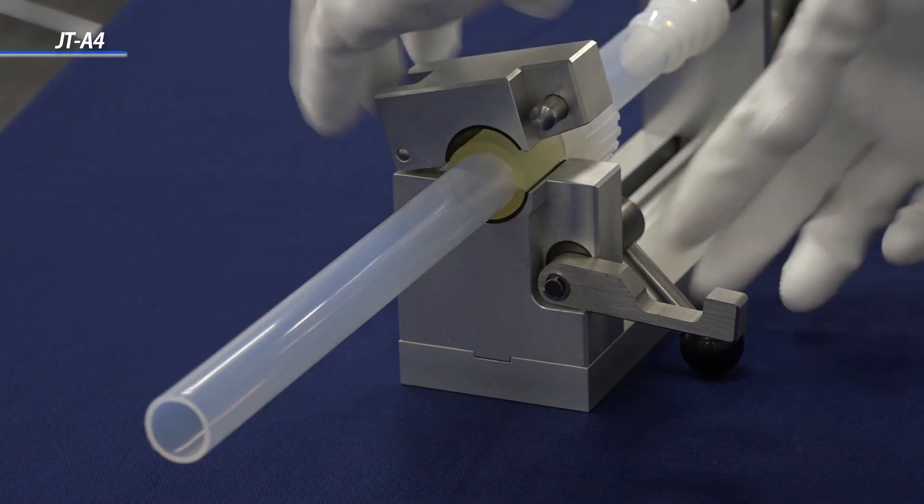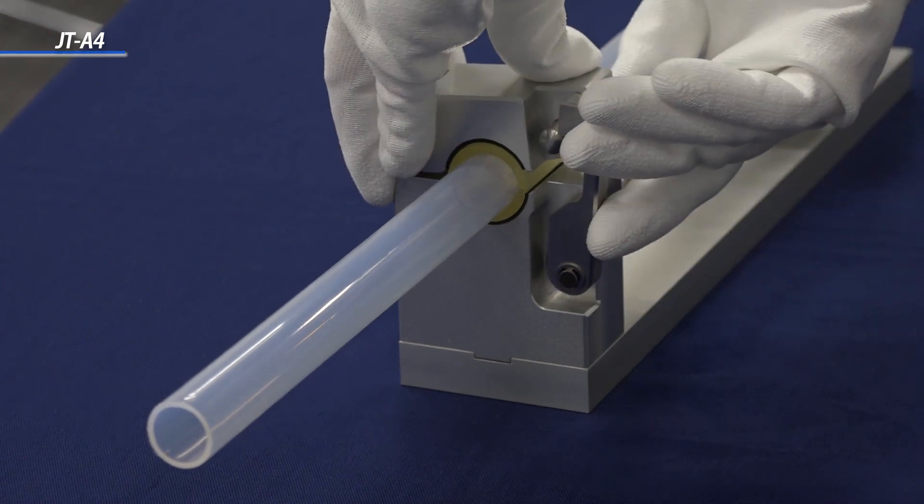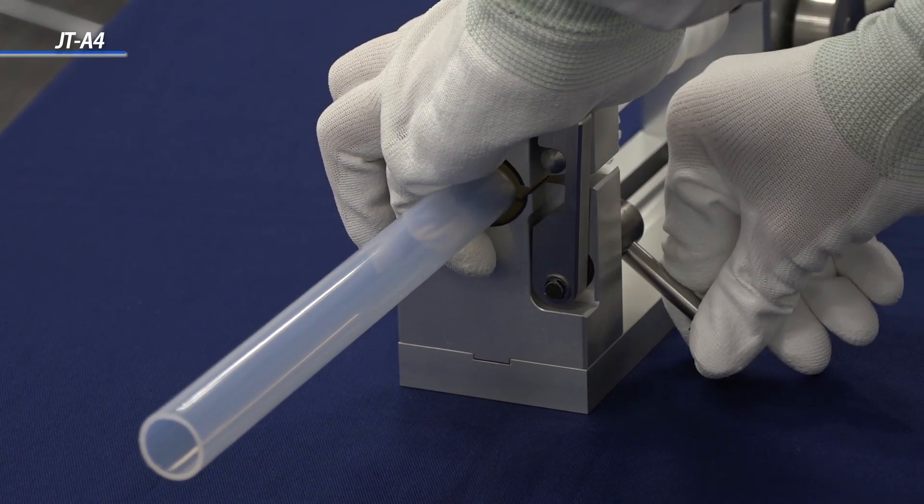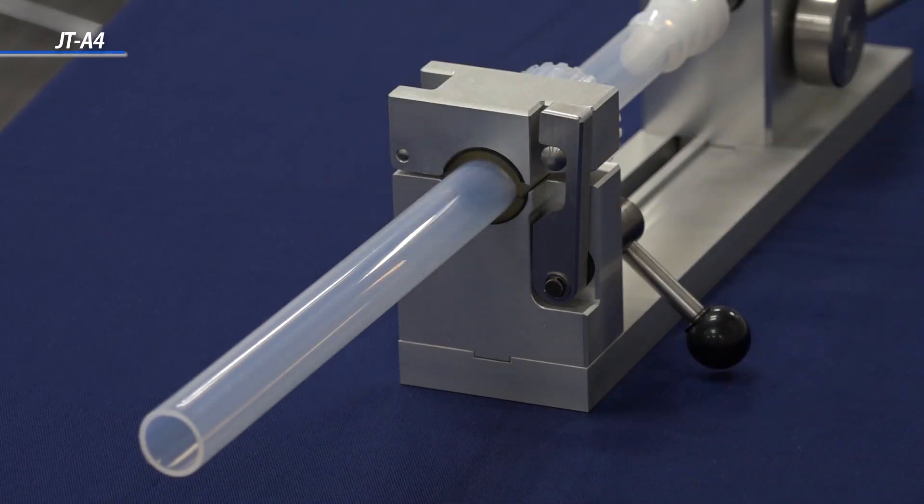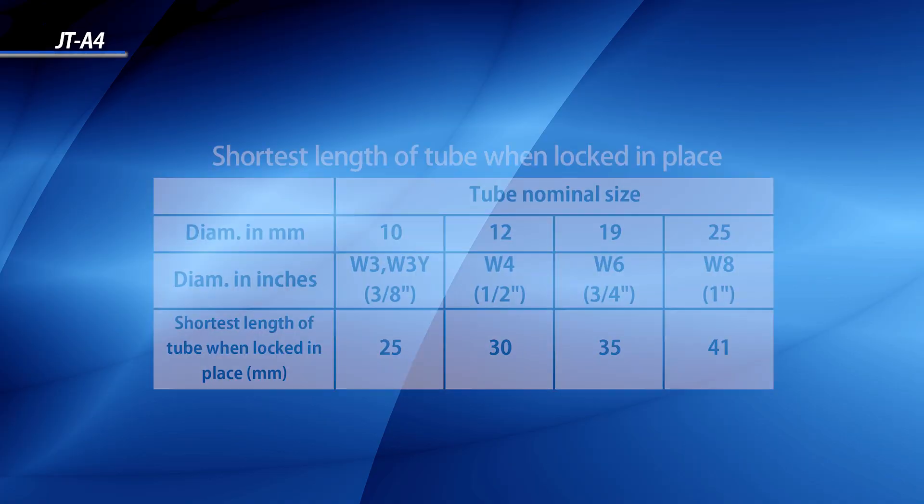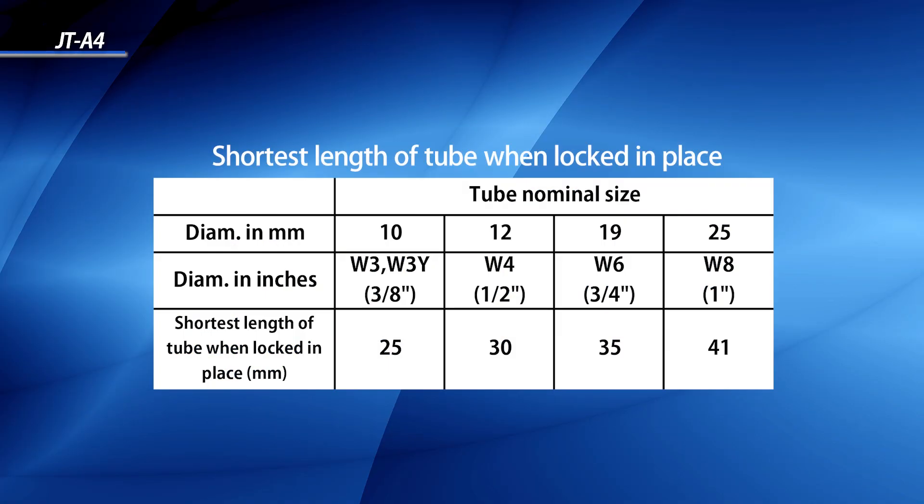Pull the lever on the tube clamp to engage the hook. This is necessary to lock the clamp. Lowering the lever far down locks the clamp. This is the minimum length of the tube in the insertion.